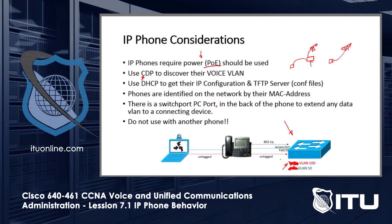The data VLAN is VLAN 100 and the voice VLAN is VLAN 50. The phone gets assigned to the voice VLAN 50. You can see the 802.1Q tagging going on between the switch port and the phone — there's a pseudo-switch arrangement passing tagged traffic. The data VLAN is 100 and voice VLAN is 50.